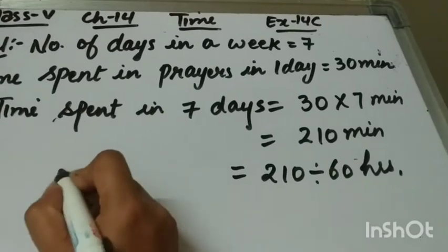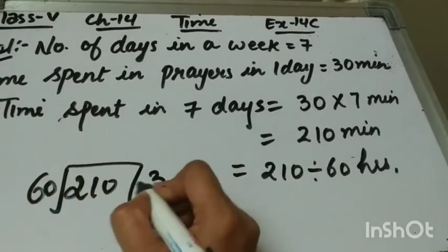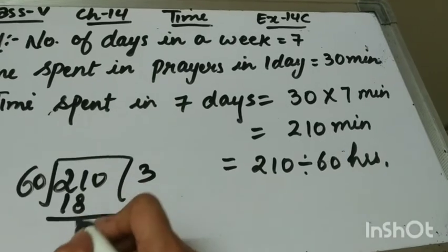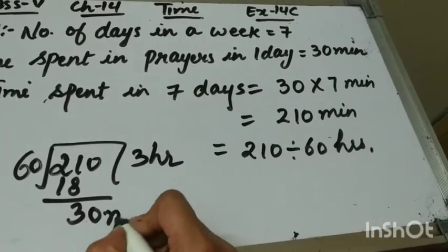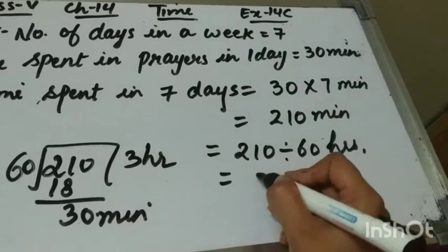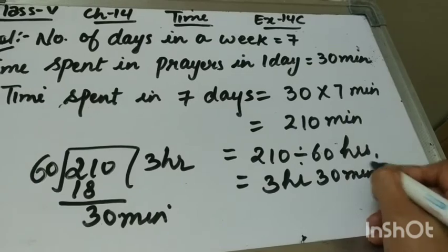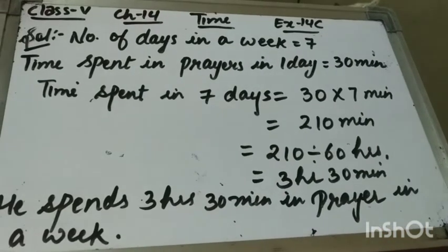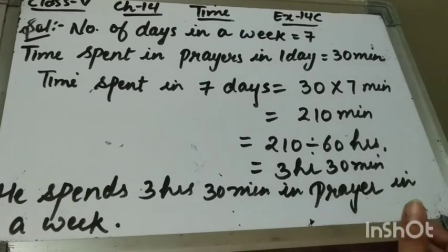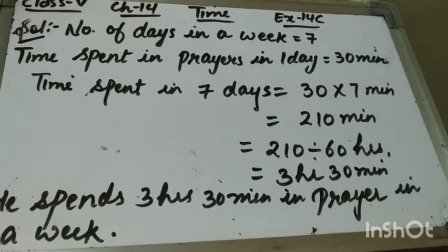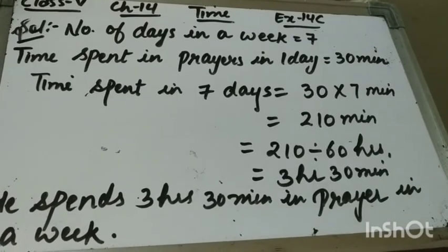When we divide 210 by 60, it will be 3 hours and 30 minutes. So your answer will be 3 hours and 30 minutes. He spends 3 hours and 30 minutes in prayers in a week. So this is question number 5 of exercise 14c.